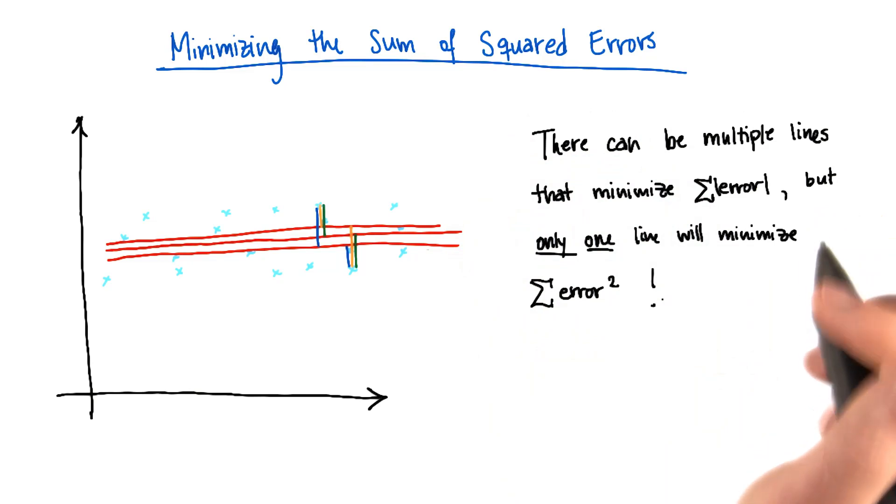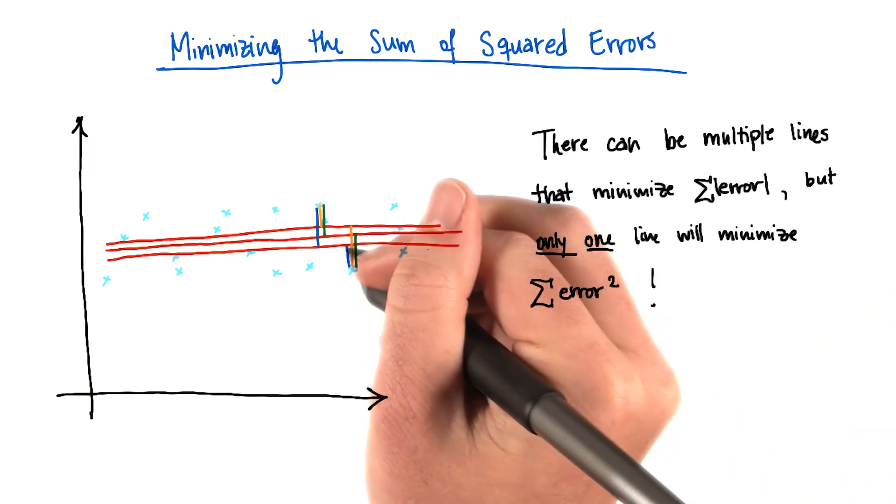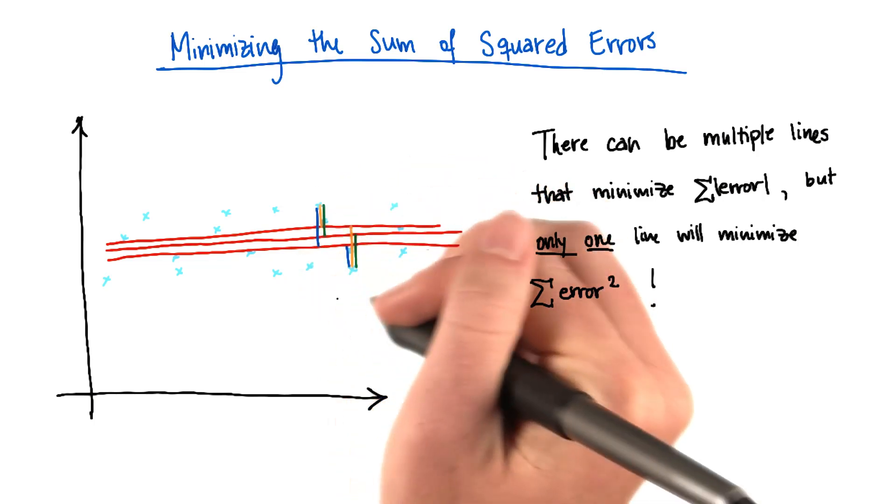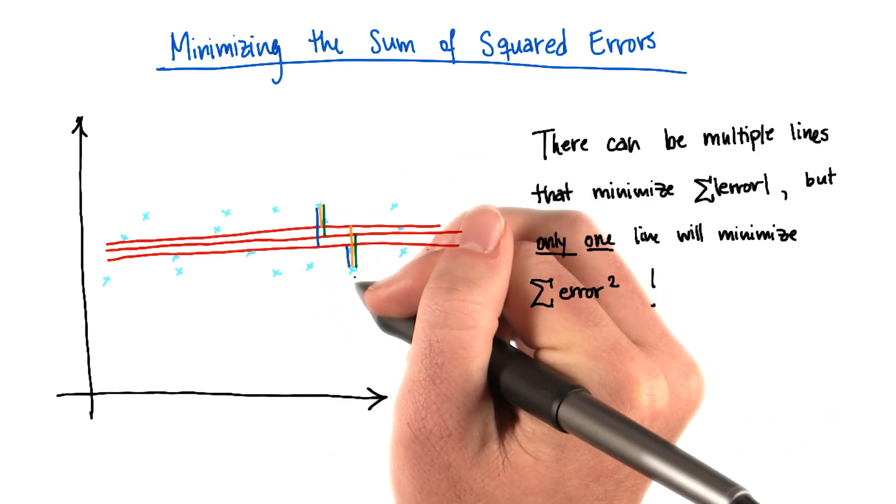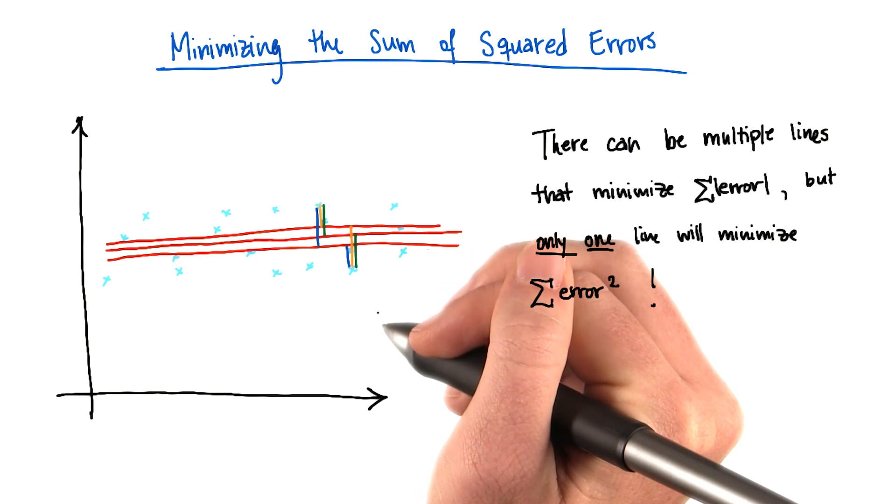In other words, there can be multiple lines that minimize the absolute errors. There's only going to be one line that minimizes the error squared. In other words, this ambiguity does not exist when the metric that we use is not the absolute value of the distance, but the distance squared.